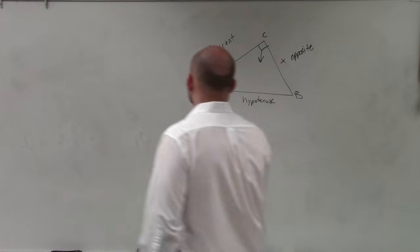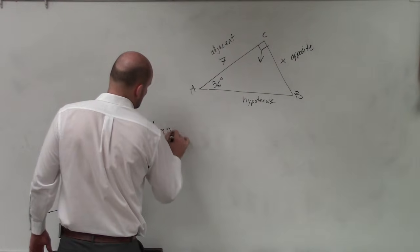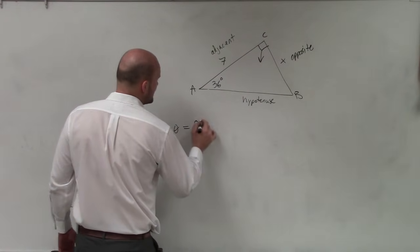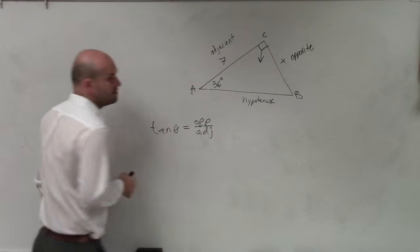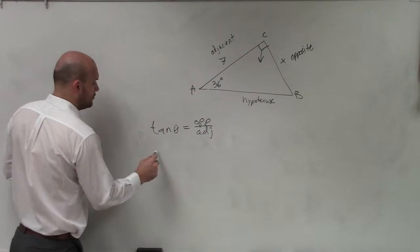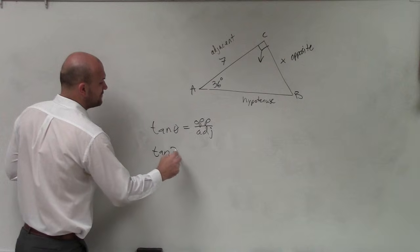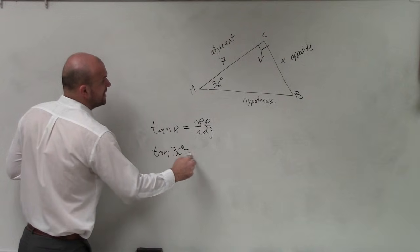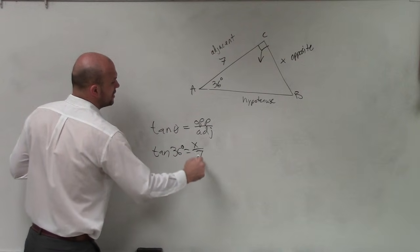So the tangent, because this is what you guys are supposed to all write down, tangent is opposite over adjacent. So in this case, we know the angle, which is tangent of 36 degrees equals opposite over adjacent.